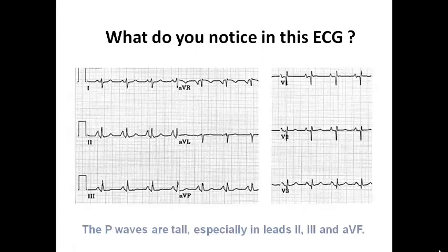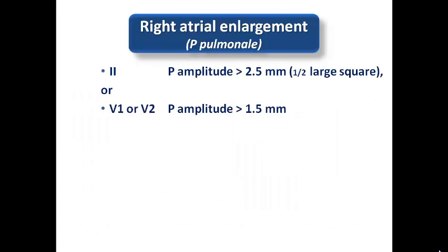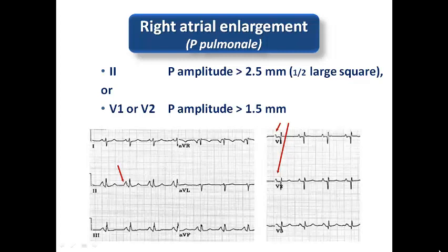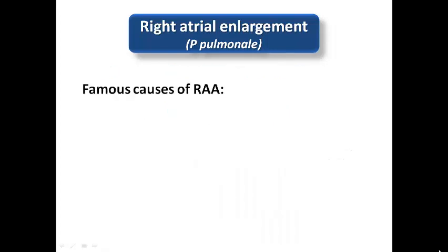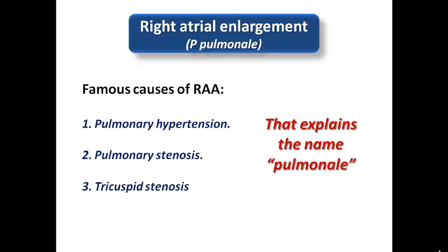On the ECG, we can see that P waves are tall, especially in leads 2, 3, and AVF, and the positive deflection of the P wave in V1 is accentuated — diagnosing right atrial enlargement. The parameters to diagnose right atrial enlargement are a P wave amplitude of more than 2.5 mm, which is usually more than half a large square, and in V1 and V2, P wave amplitude more than 1.5 mm. Famous causes include pulmonary hypertension, pulmonary stenosis — explaining the name P pulmonale — tricuspid stenosis, and tricuspid regurgitation.